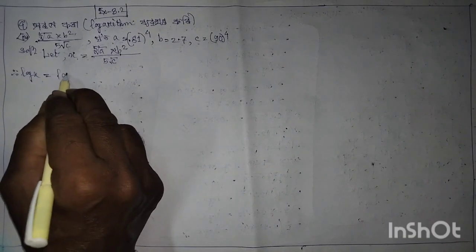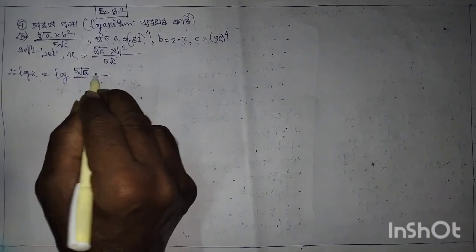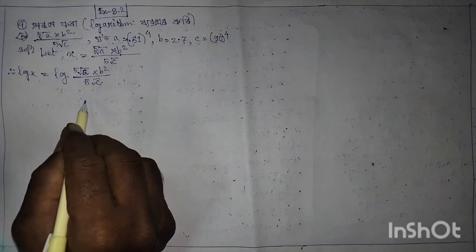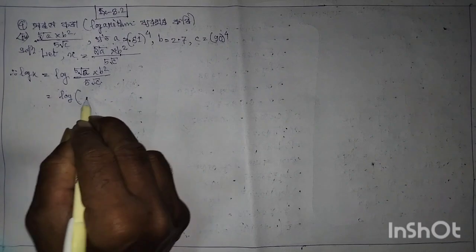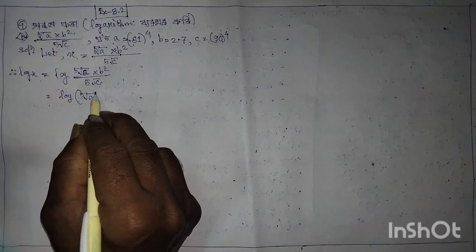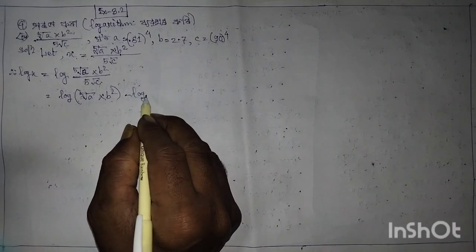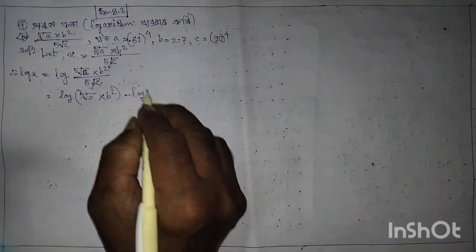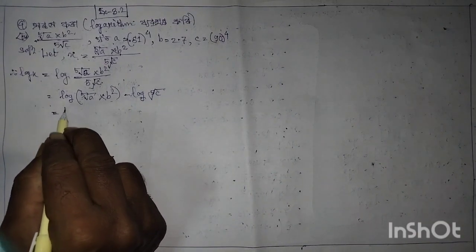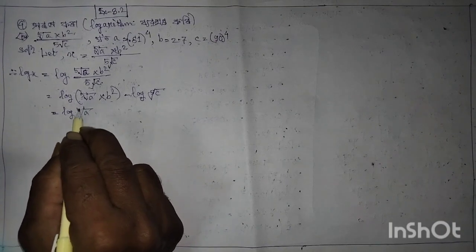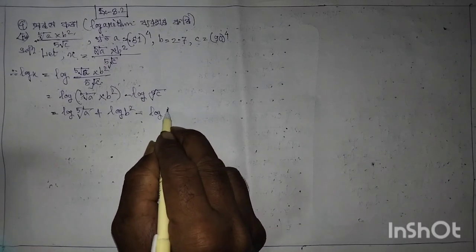log 5th birthday by 5th birthday, log 5th birthday minus log 5th birthday. B14, again log 530, plus log B square, minus log 530.